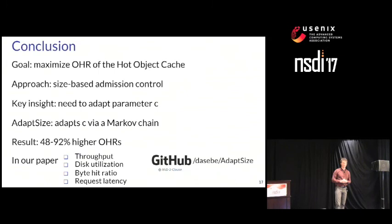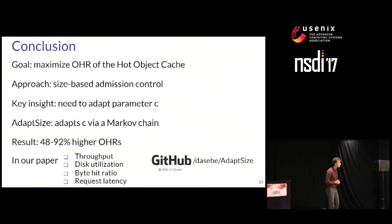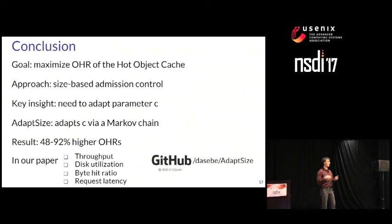Andrew May from Viasat asked whether we looked at other features beyond file size — such as file type or domain — to impact the admission policies. We haven't, but that's a good future direction. Peter Matsko from NetApp asked why AdaptSize performs better than frequency-based admission. If you treat two objects with the same frequency but very different sizes the same way, you lose under the object hit ratio metric: both give the same credit, but one costs much more cache space. Frequency alone is just not enough information.